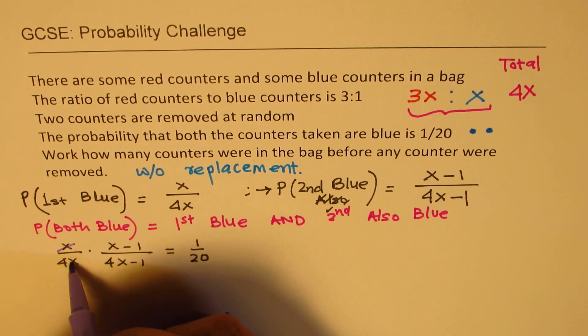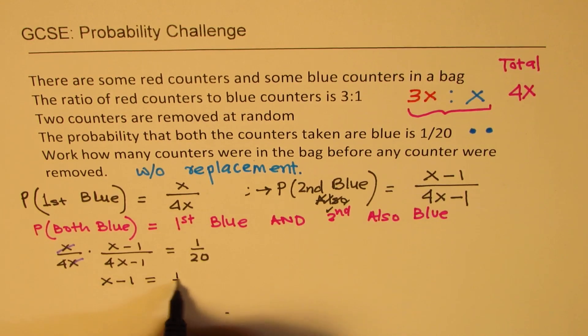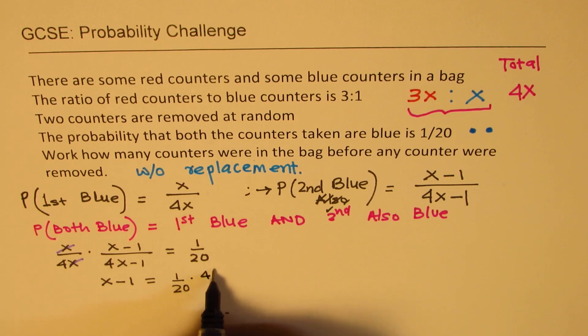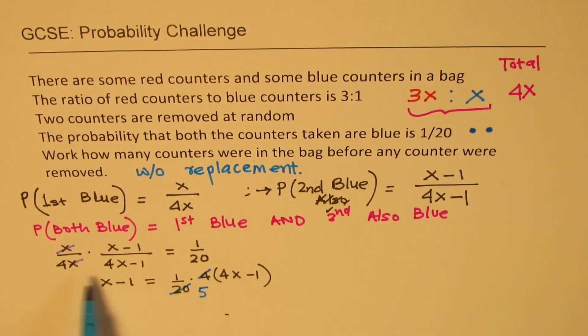We can always cancel this x, simplify a bit. We could also simplify this portion. It becomes 5. So let me rewrite this equation as x minus 1 equals to 1 over 20 times 4 times 4x minus 1. I purposely wrote like this to show you one more step. We could have canceled from here also, but at times that creates confusion. So I cross multiply, retained x minus 1, the numerator here.